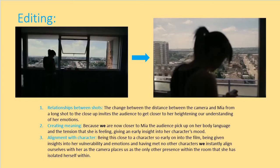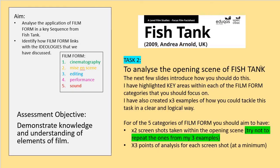So there are my three examples. Let's recap the task: you need to analyse the opening scene of Fish Tank. I've highlighted the key areas within each category of film form that you should focus on, and you've now got three examples. The difference from my examples is you have to take two screenshots per category — so in total, you will have 10 different slides — and make three points of analysis for each shot. Try not to use the same shots I've taken, but if you've inferred something different from them, you could use them.